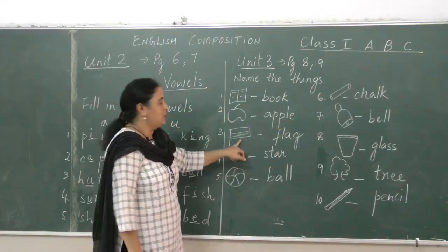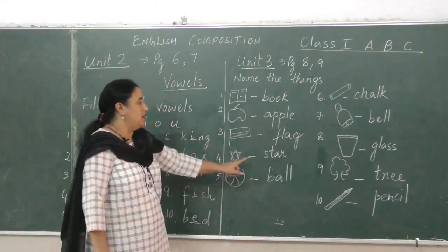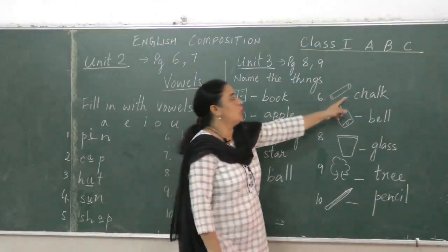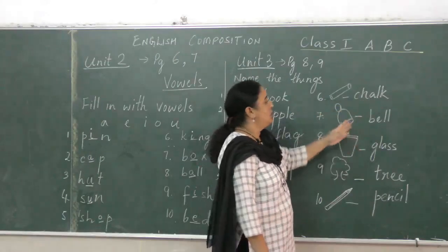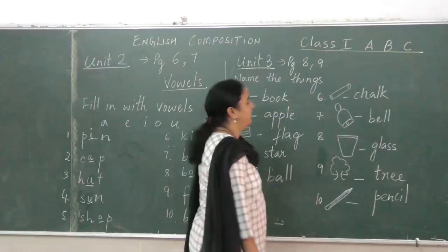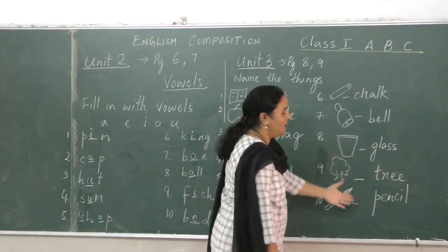Then you have flag. You have to draw the flag and then write flag. Star, I have drawn the star, write star. Ball. This is chalk, C-H-A-L-K, chalk. This is the picture of a bell, I have written the word bell. This is a picture of a glass, a tree, and a pencil.